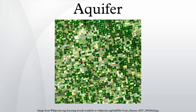In 2013, large freshwater aquifers were discovered under continental shelves off Australia, China, North America, and South Africa. They contain an estimated half a million cubic kilometers of low-salinity water that could be economically processed into potable water.